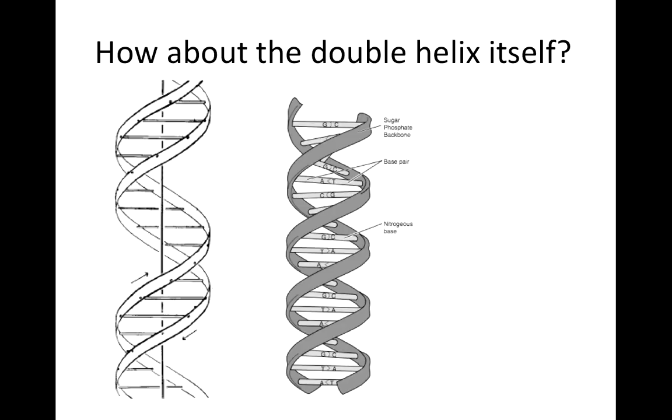Here is a slightly more detailed view of a double helix. You can see from this diagram that the backbone, or sides of the ladder, is made up of sugar and phosphate, and the rungs of the ladder are made up of the nitrogenous bases.